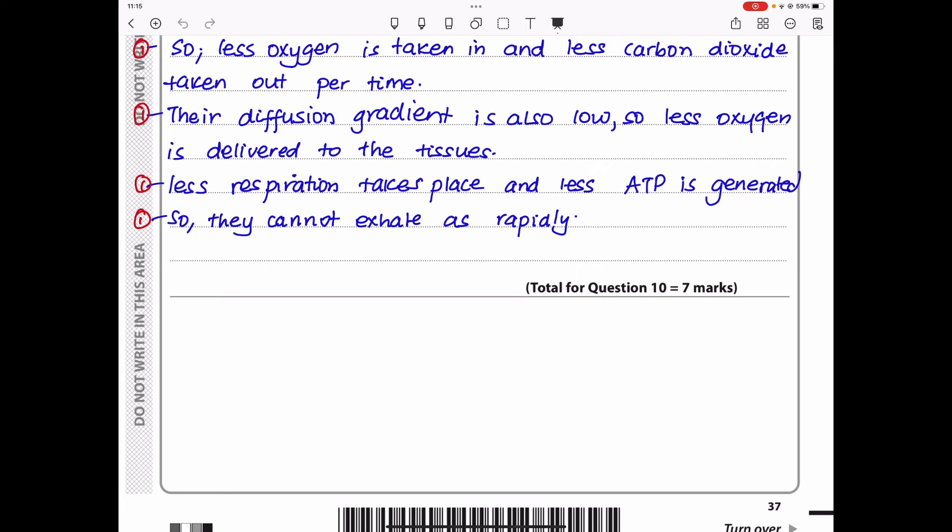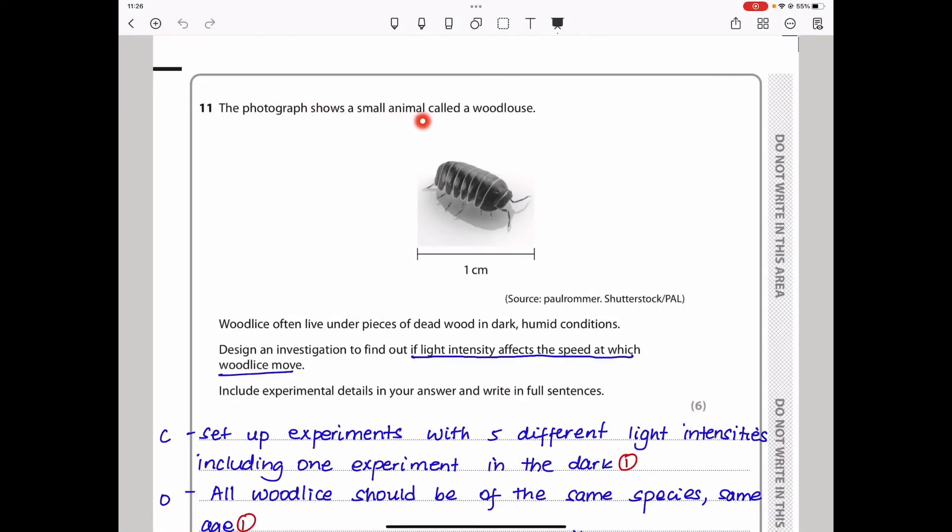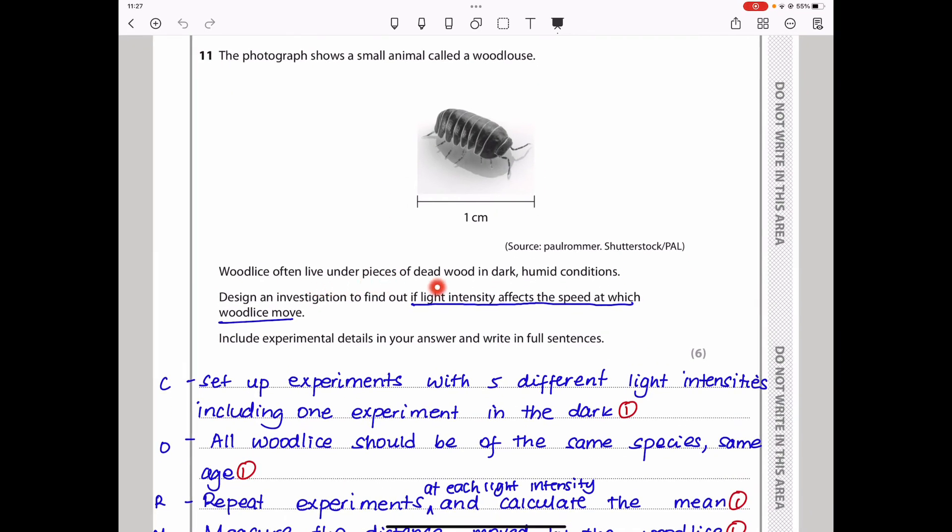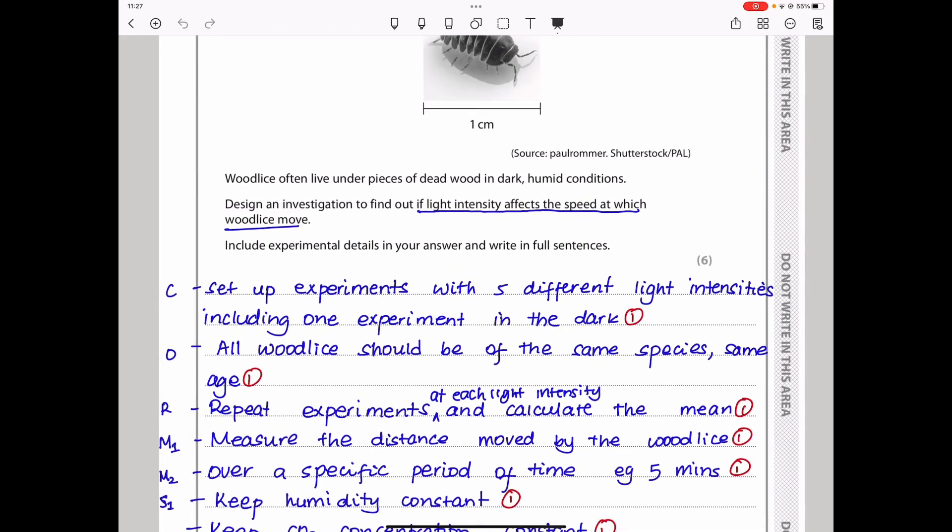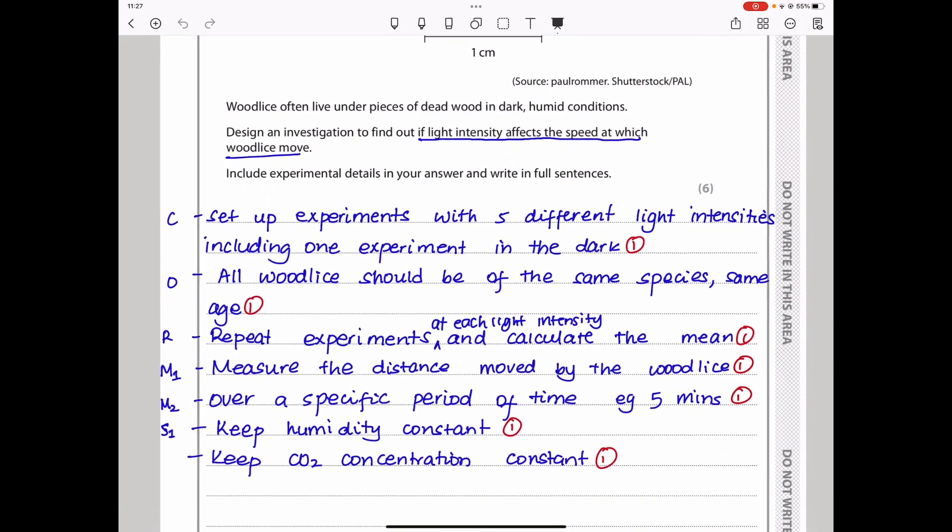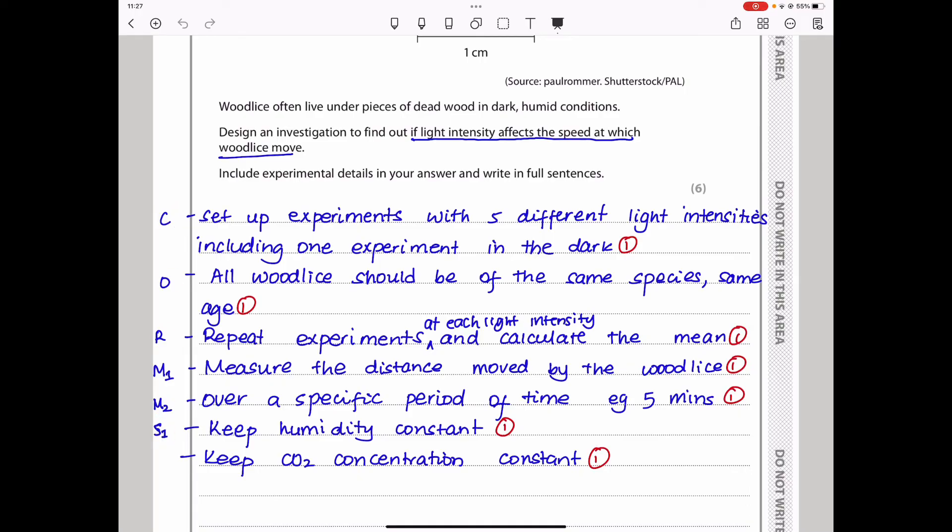Question 11. The photograph shows a small animal called a woodlouse. Design an investigation to find out if light intensity affects the speed of movement of woodlice. We can see this is going to be the independent variable. We have to vary the light intensity and measure the distance which the woodlouse moves in order to calculate the speed. Measure the distance within a specific time and use that information to calculate the speed. For IGCSE, we can answer this question using the CORM1M2S1S2 style.